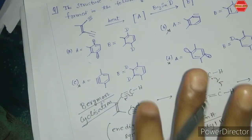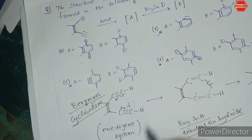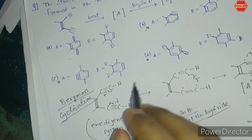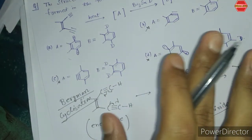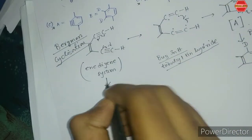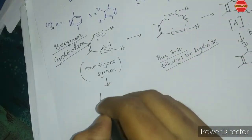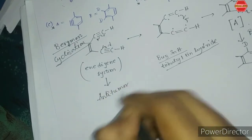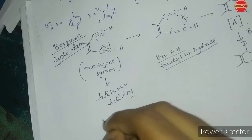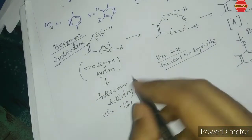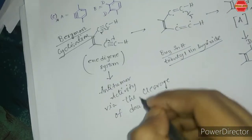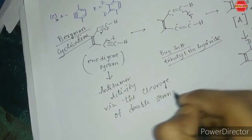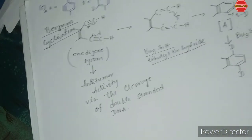The enediyne system we are discussing shows remarkable anti-tumor activity through the cleavage of double-stranded DNA. This is a very important biological activity of this type of structure — anti-tumor activity via double-stranded DNA cleavage.